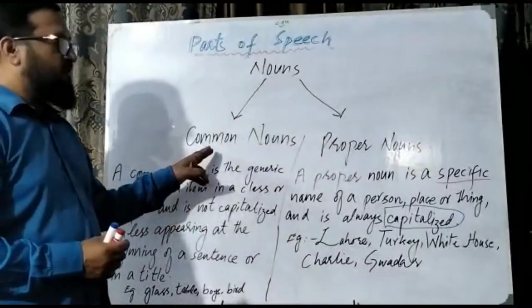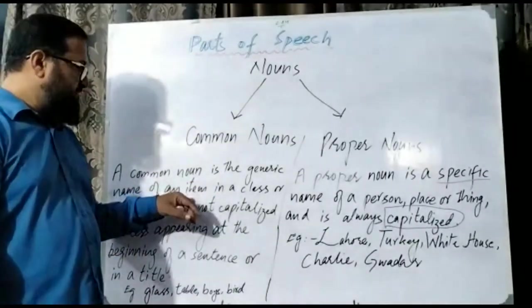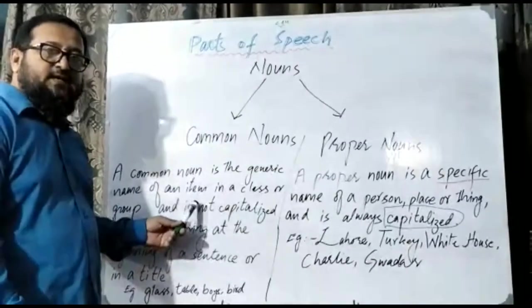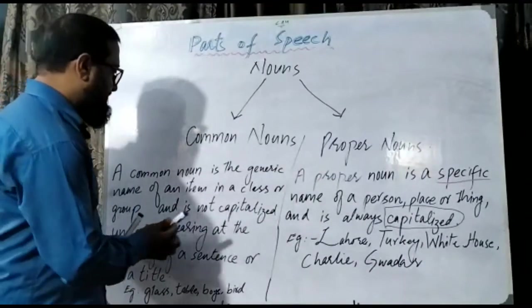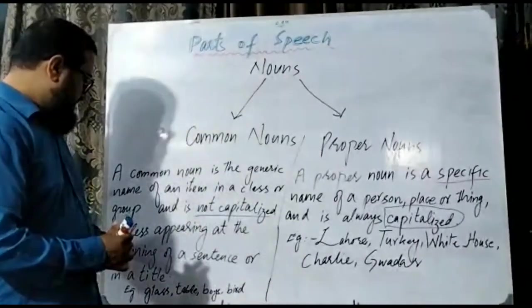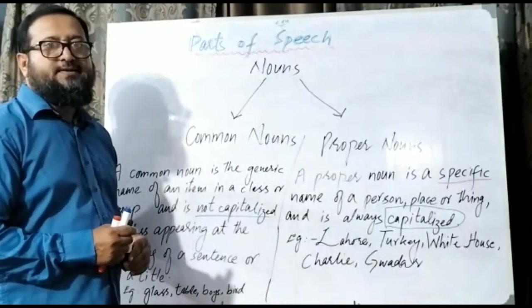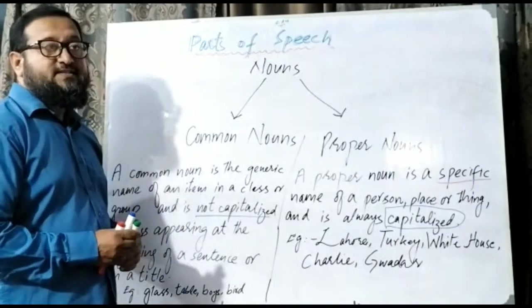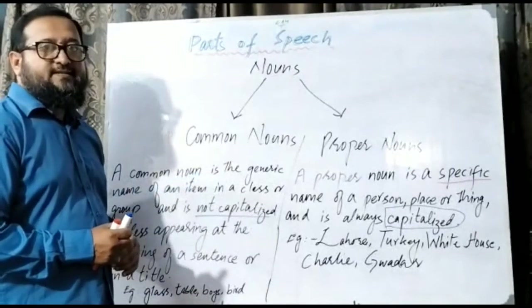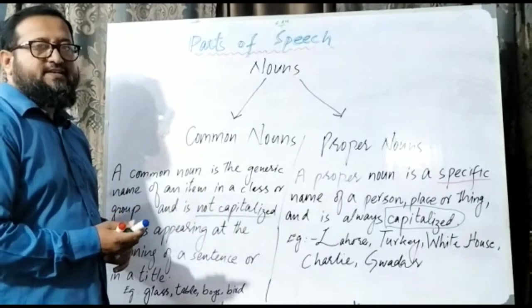As for the common noun, the common noun is the generic name — the general name of an item in a class or group. And it is not capitalized unless appearing at the beginning of a sentence or in a title. These are two conditions; generally it is not capitalized. Its first letter is not capitalized other than those two conditions.